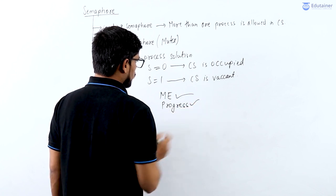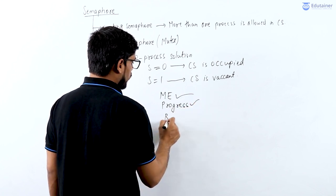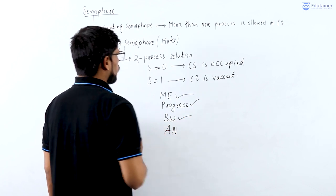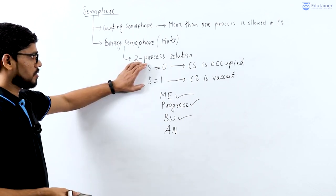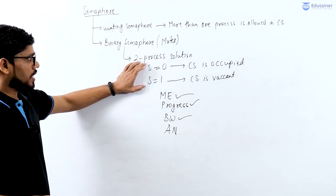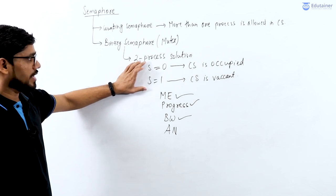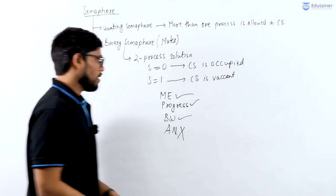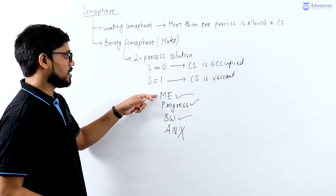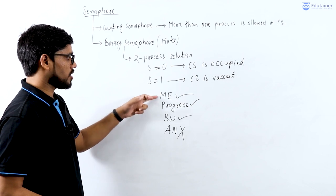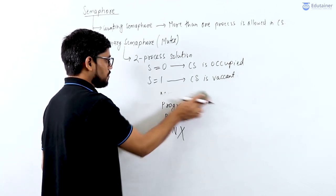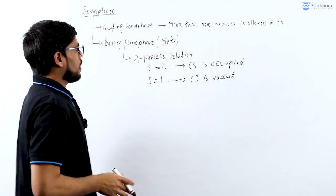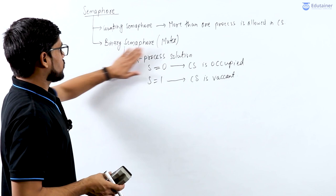It will provide bounded waiting. As for architectural neutrality — semaphore is a concept taken care of by the operating system, so it is platform-dependent, meaning architectural neutrality is not provided. But the main concern is the primary requirement: mutual exclusion and progress, which are provided by the binary semaphore, which is also called mutex.